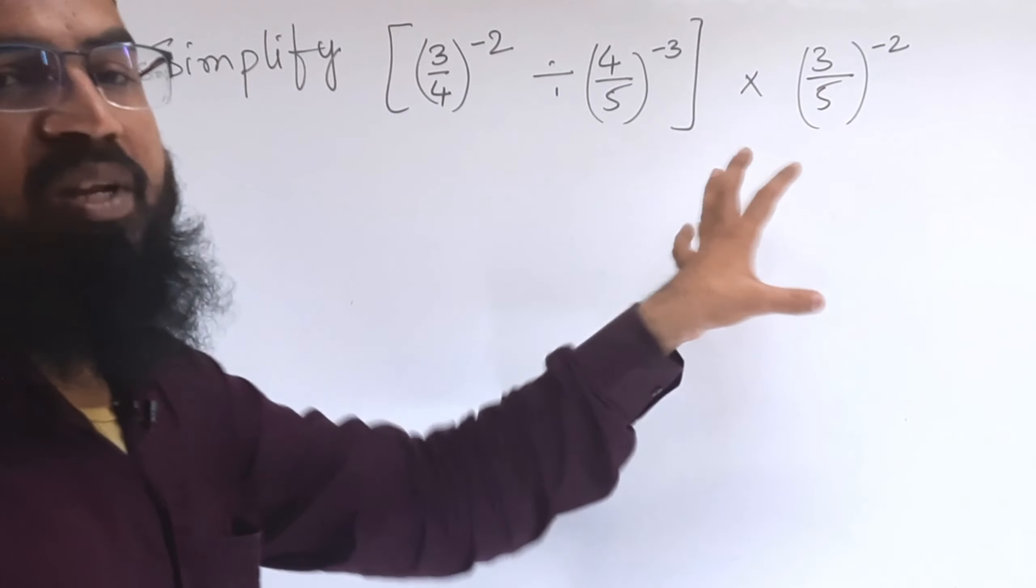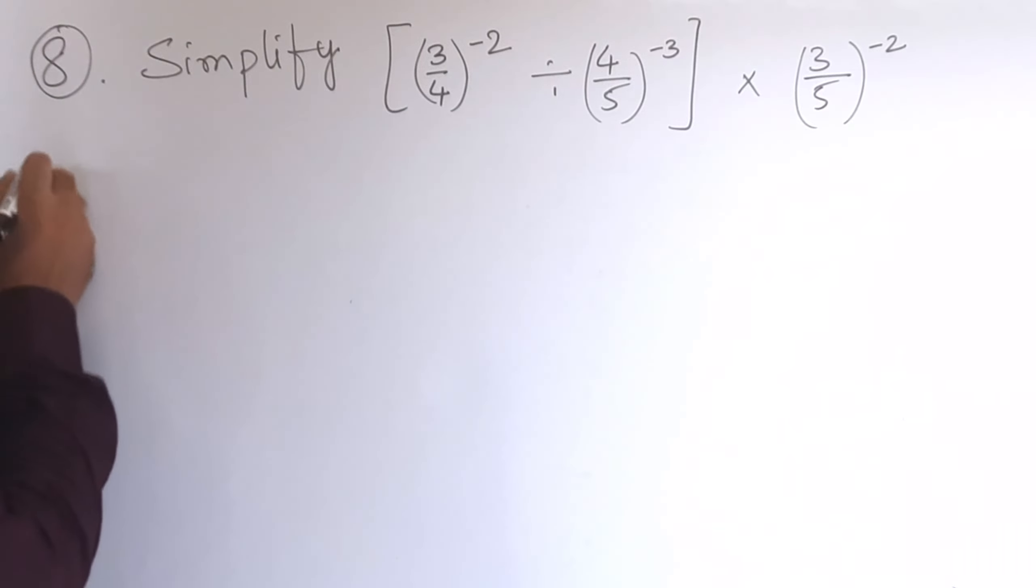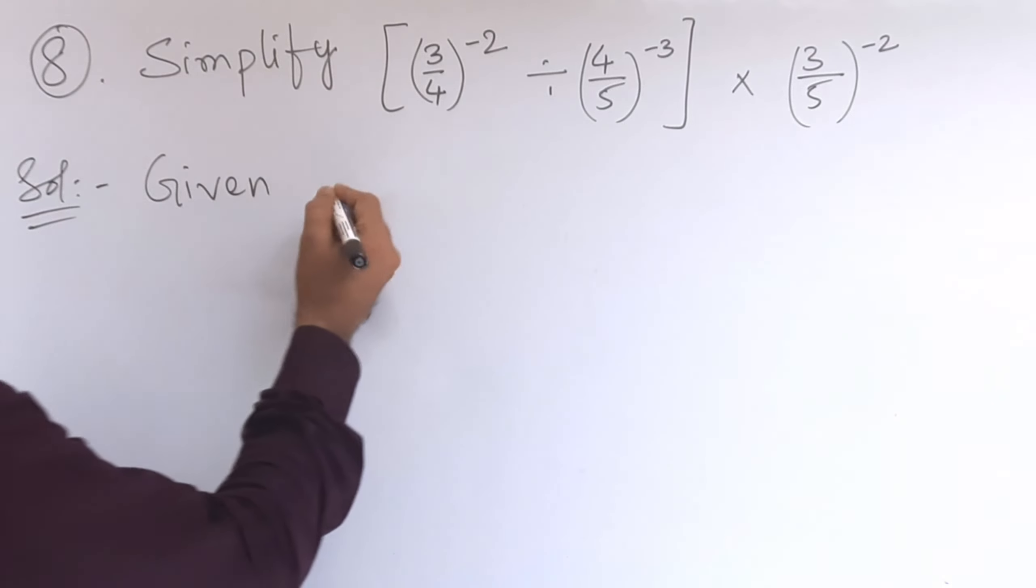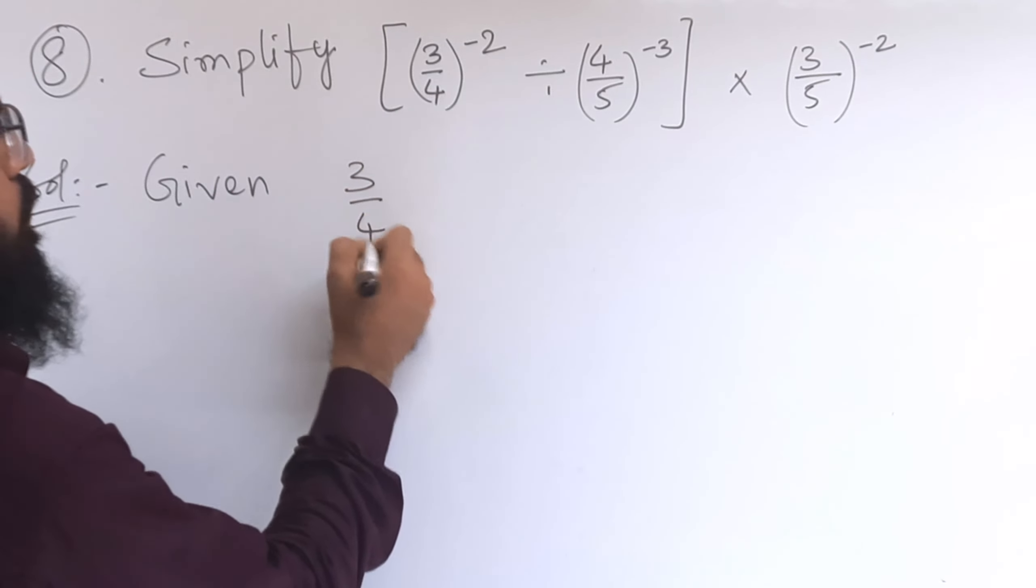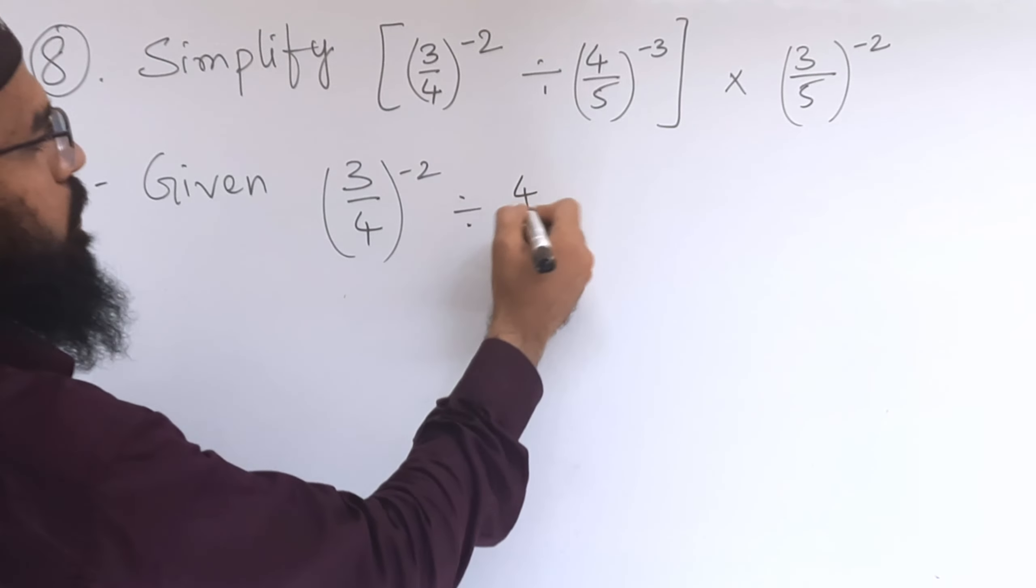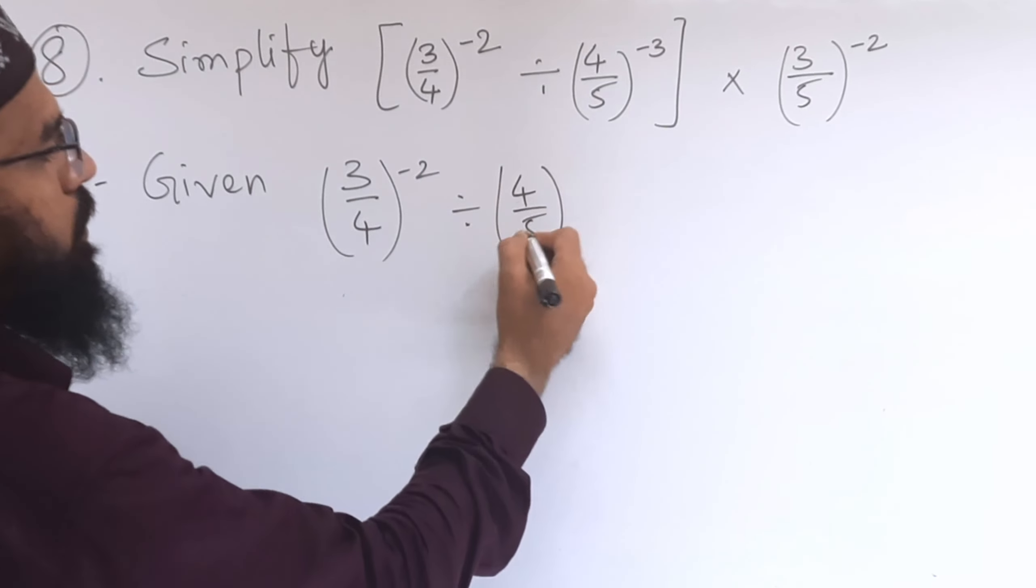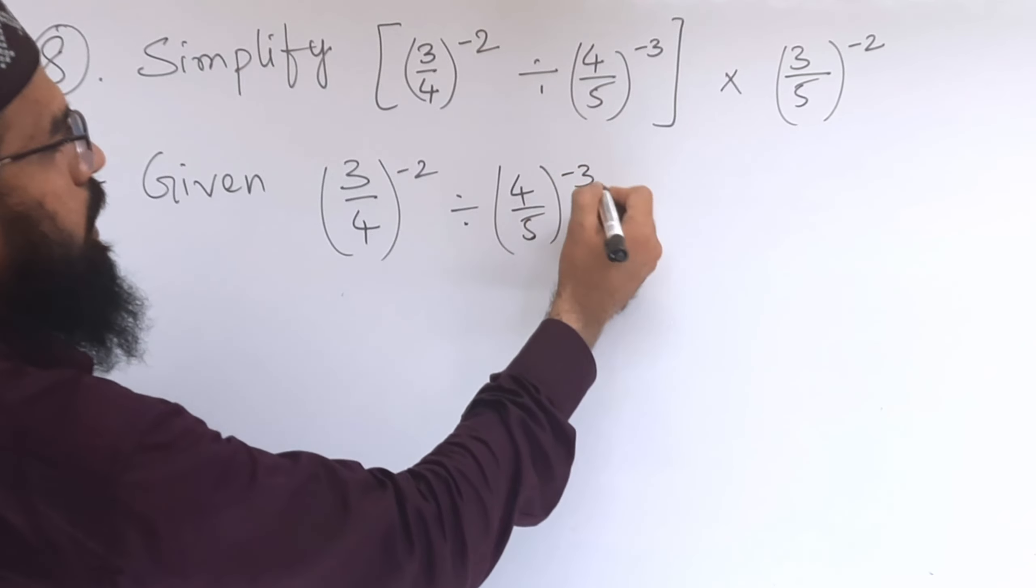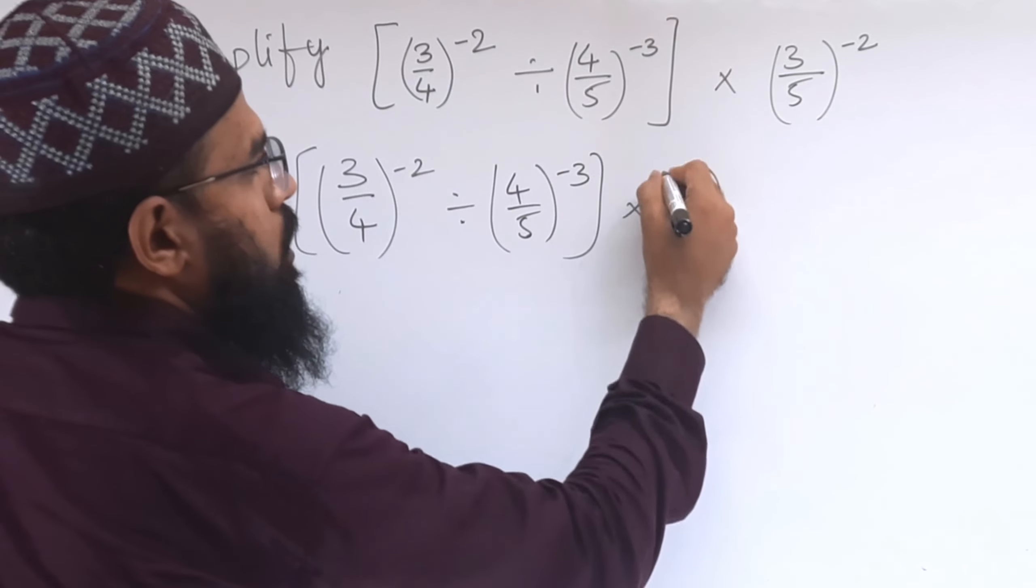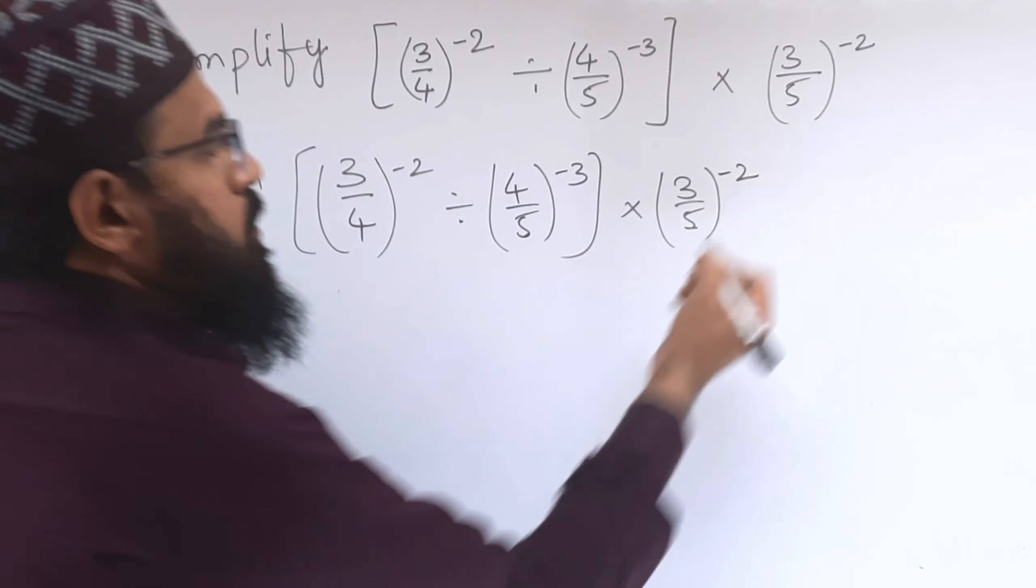We need to simplify this. Let us start the solution. We will write given: (3/4)^(-2) divided by (4/5)^(-3) into (3/5)^(-2).